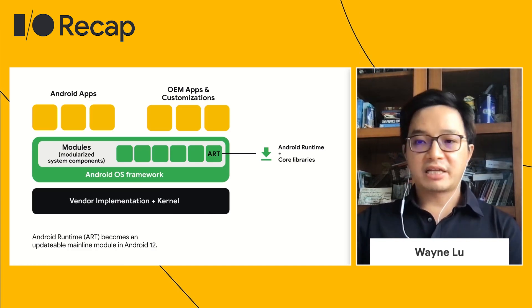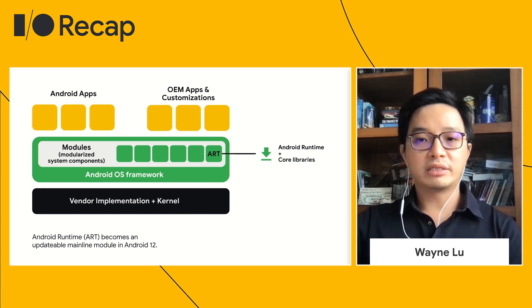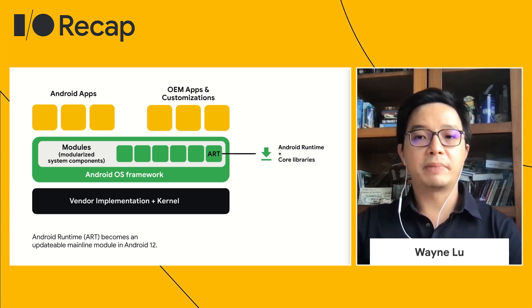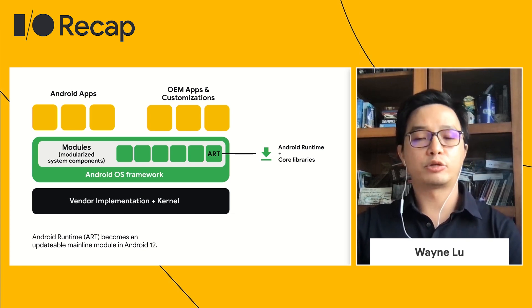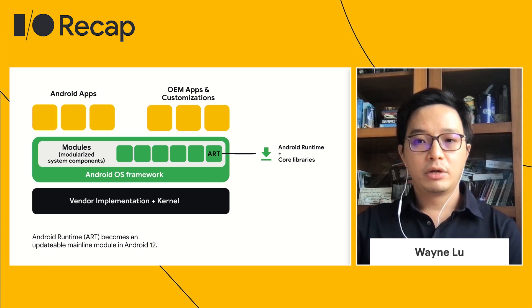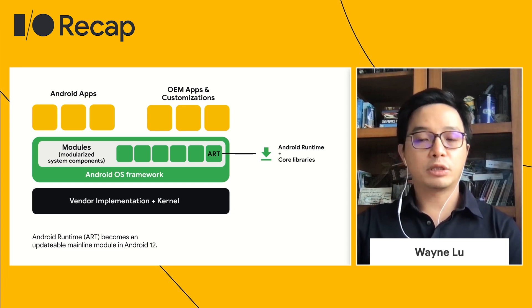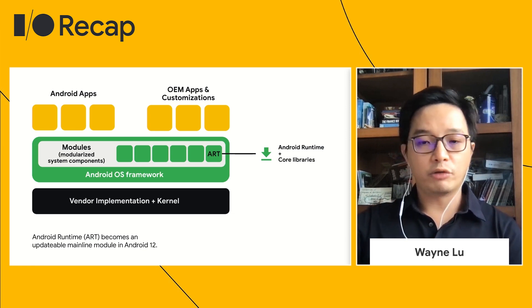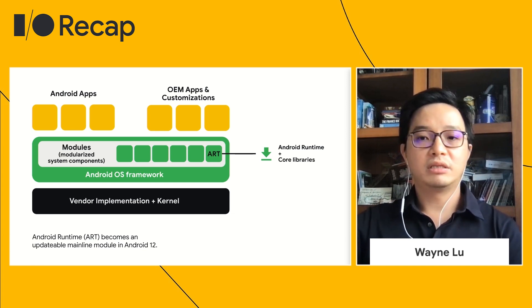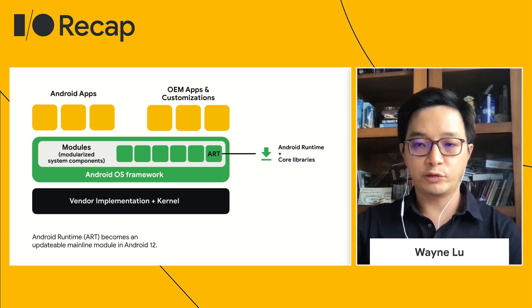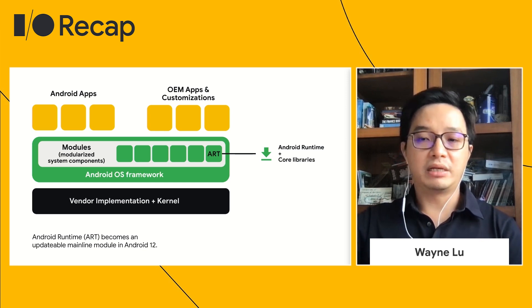I'm excited to share that ART — Android Runtime — is becoming an updateable mainline module in Android 12. We will now be able to directly update supported language features and add new APIs on future Android devices. This removes the need to wait for a full operating system update.